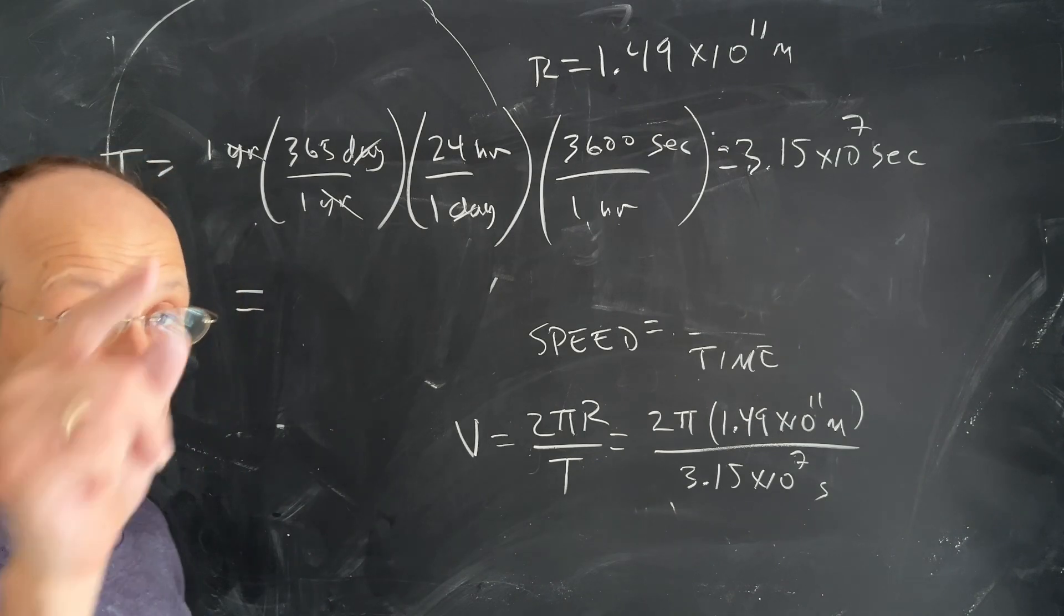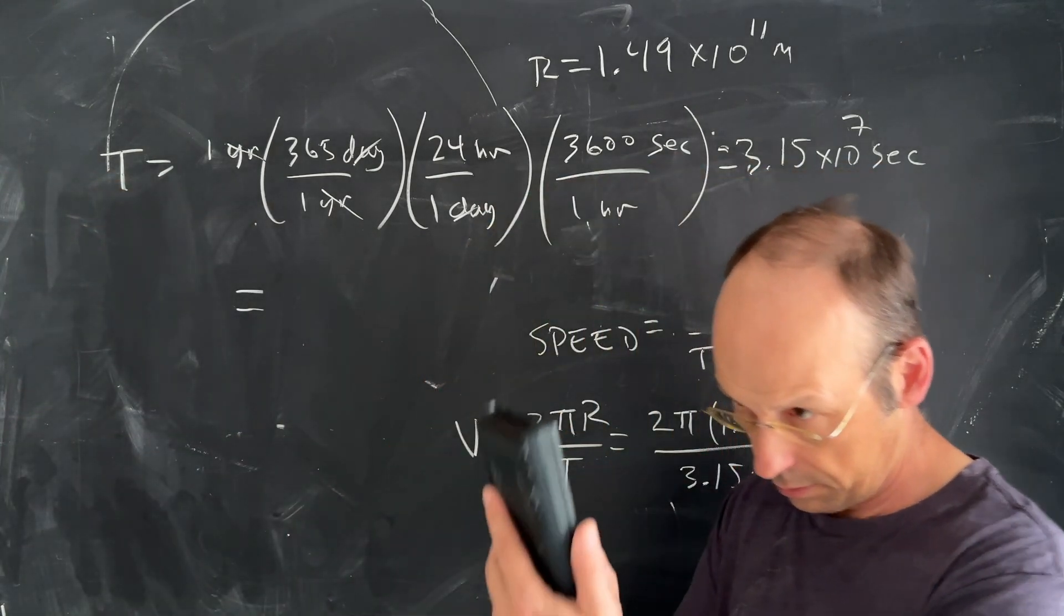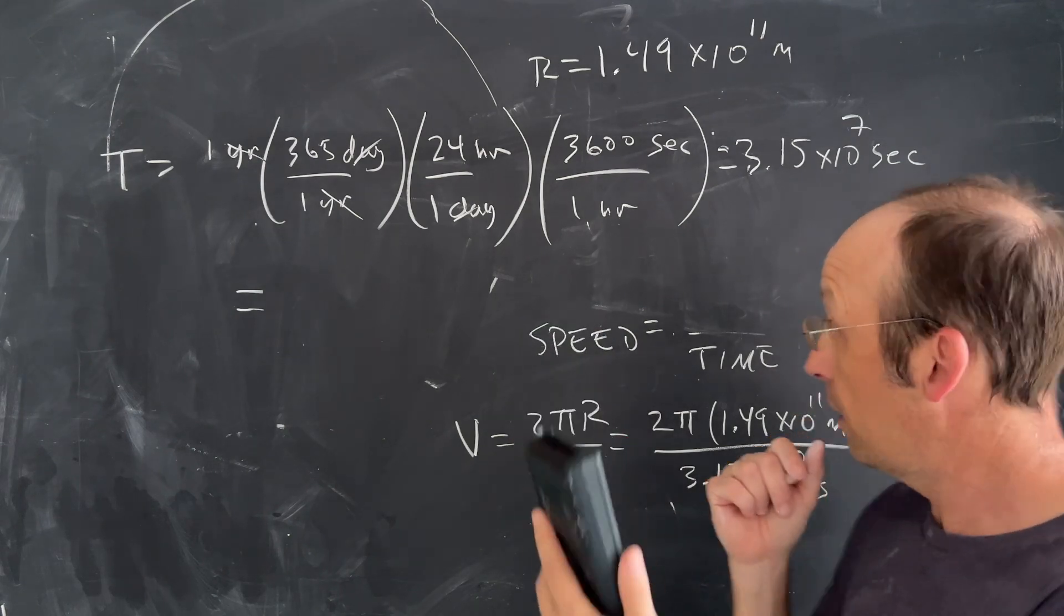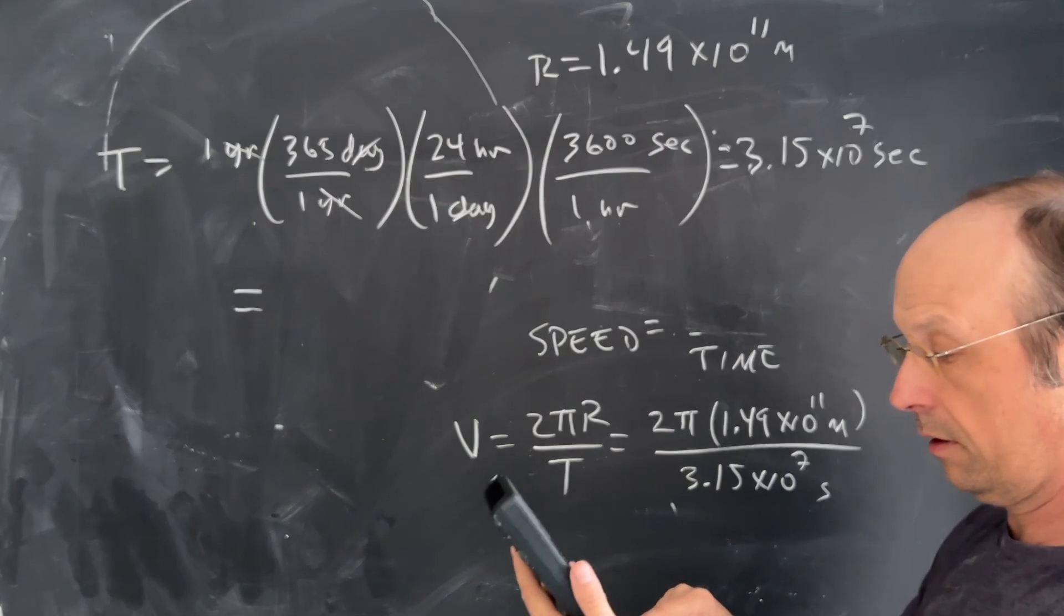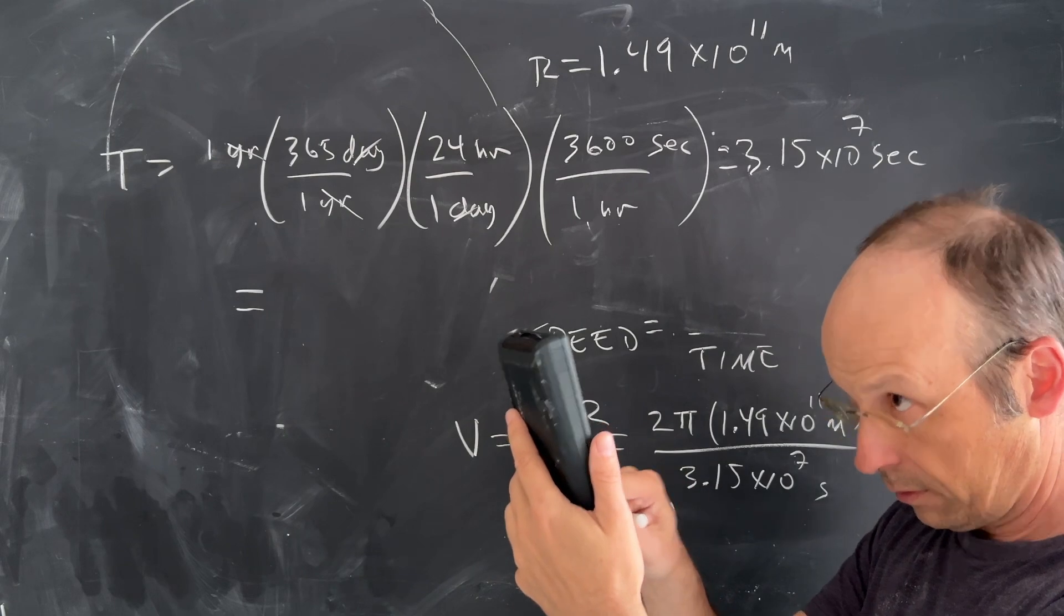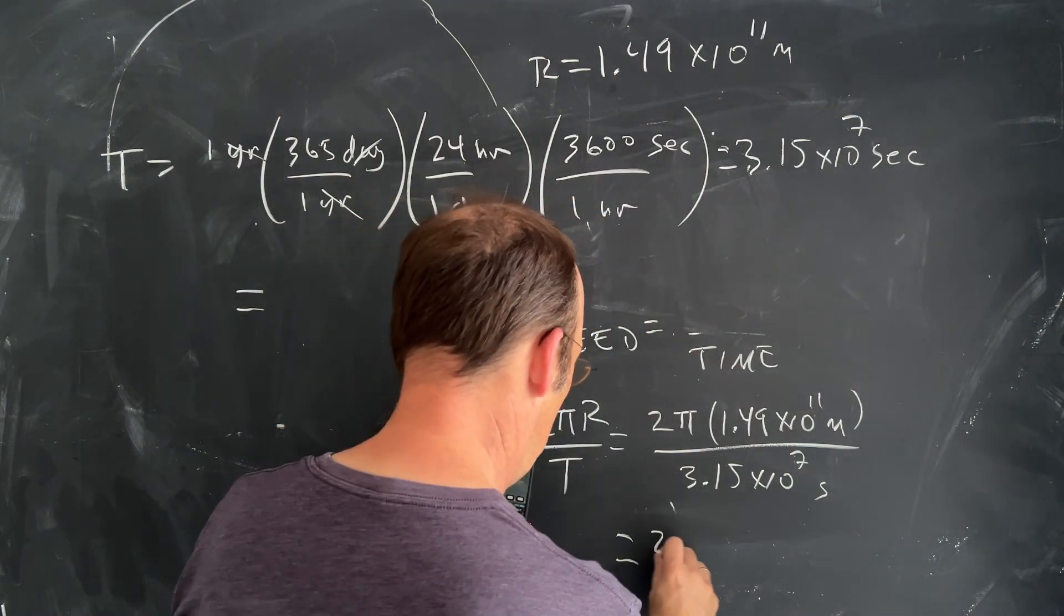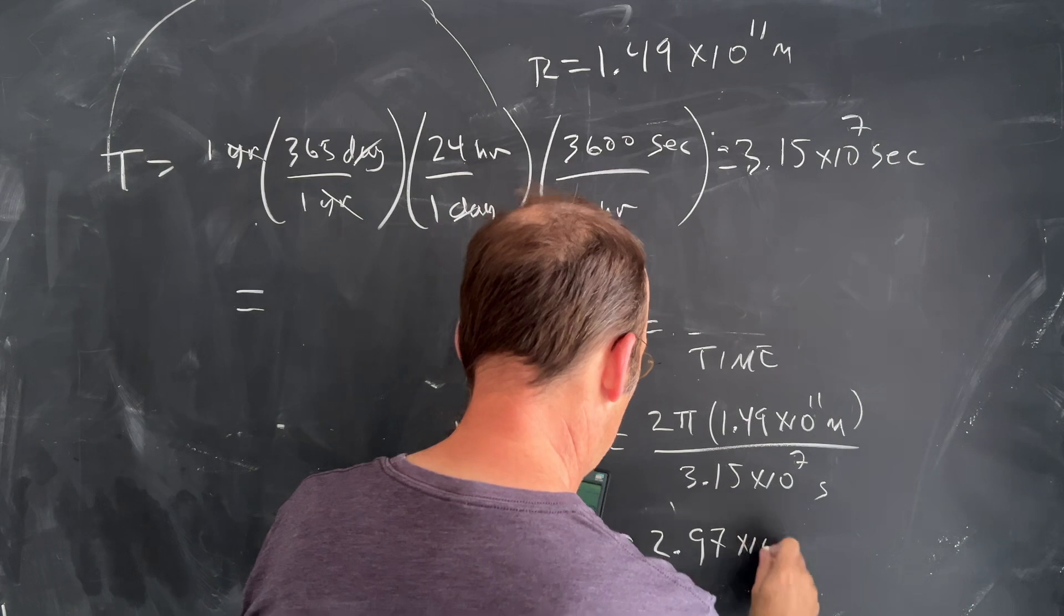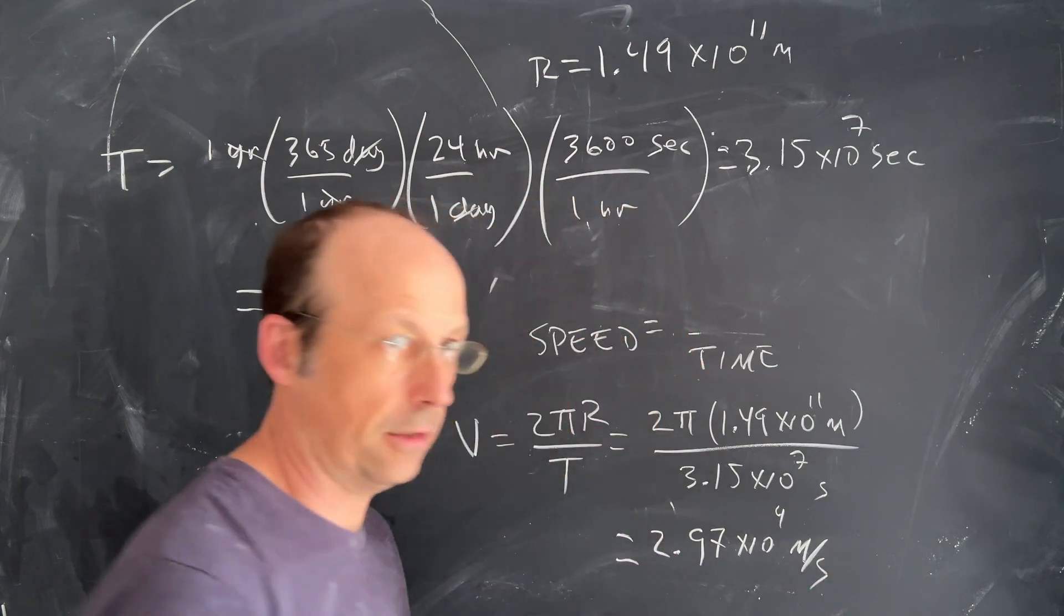So it's 2π × 1.49 × 10^11 divided by 3.15 × 10^7, and I get 2.97 × 10^4 meters per second. Check your work.